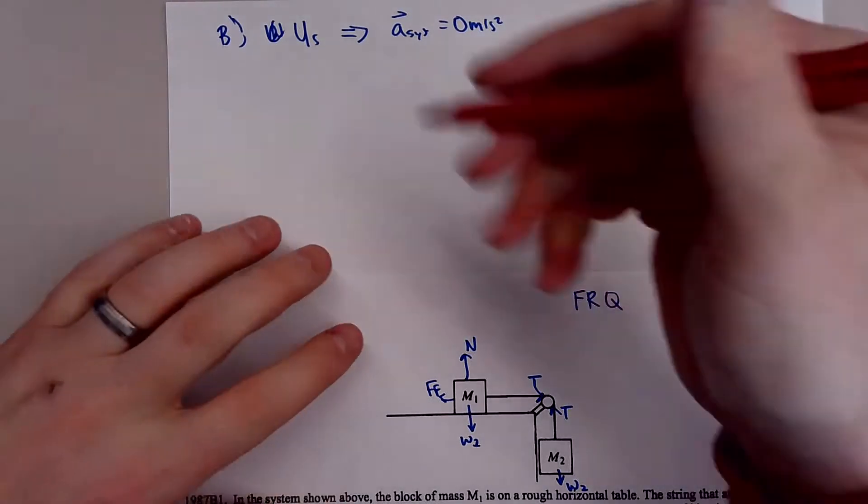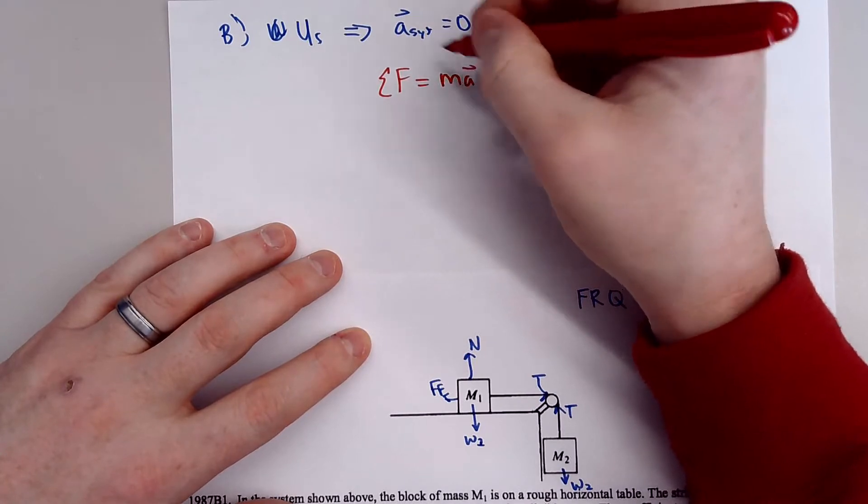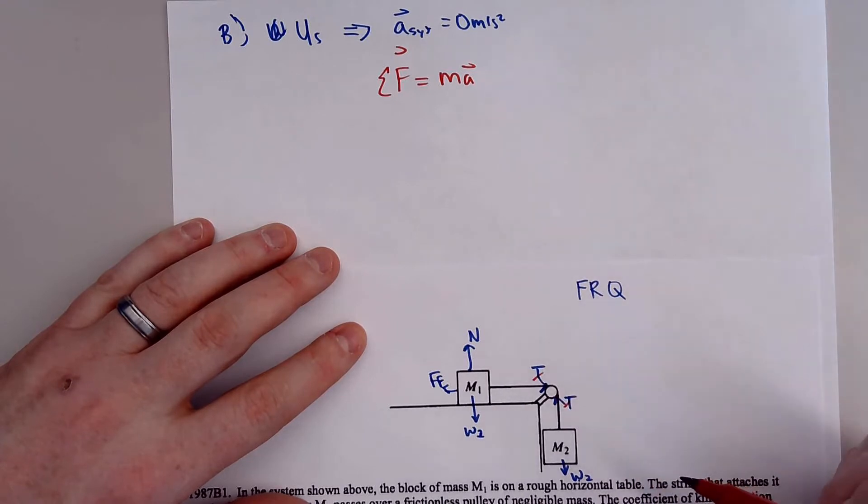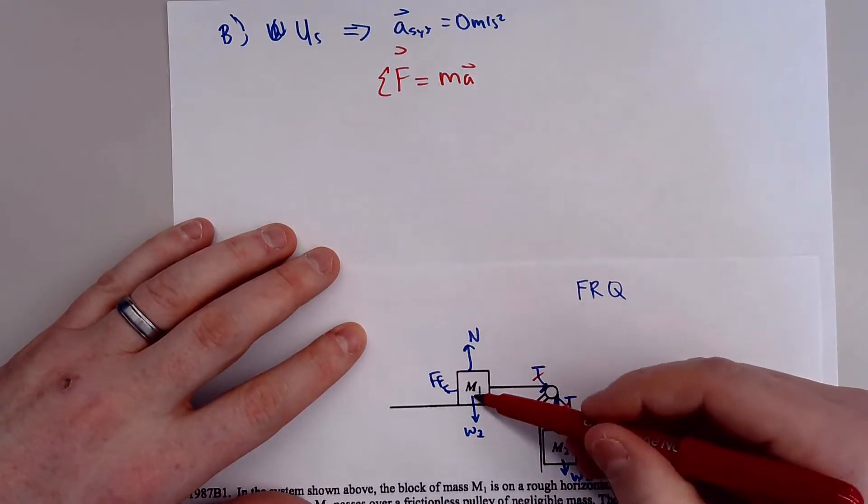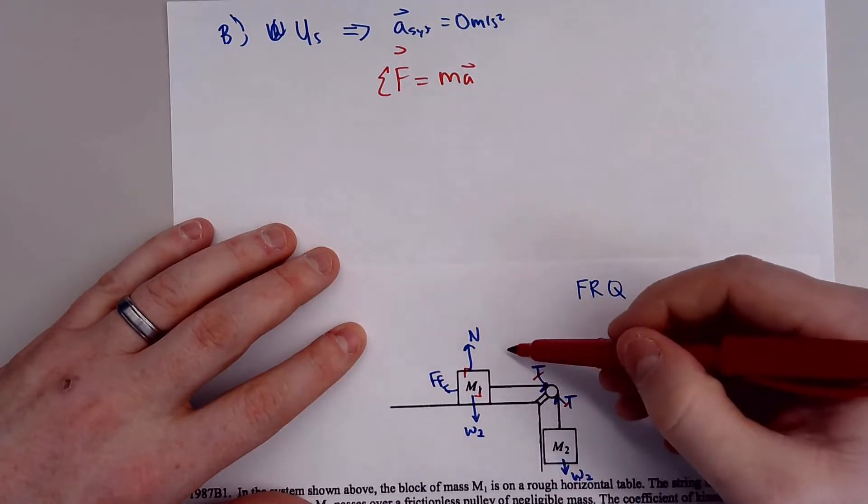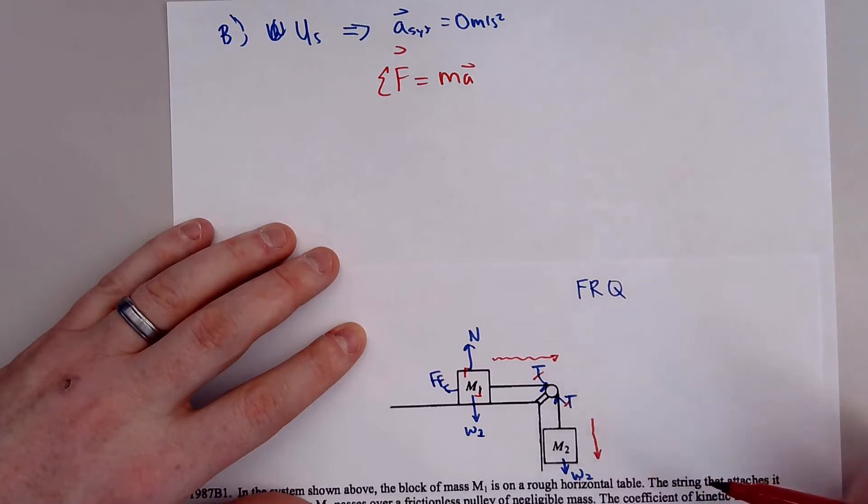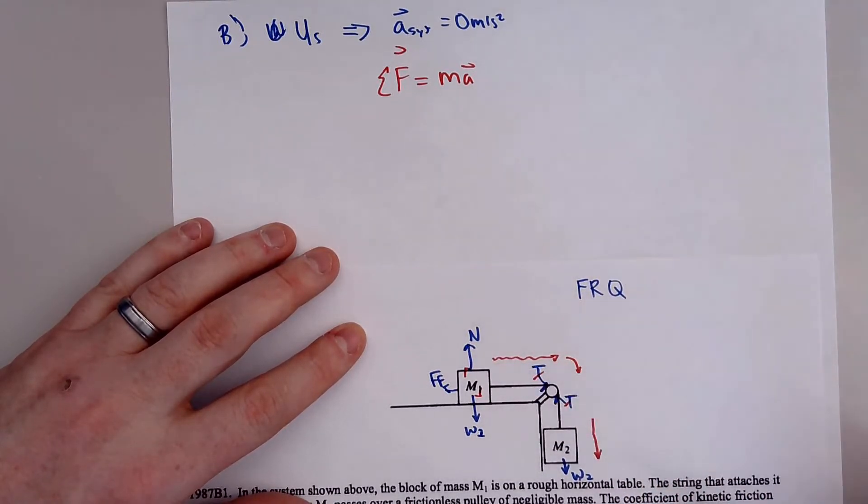All right. We're using Newton's second law. F equals MA. All right. And notice we have M2 times gravity. These two tensions will cancel out. These two normal force and the weight, they are perpendicular to our motion. So imagine this block, this block's going to slide this way, and this block's just going to fall straight down. And kind of notice, they'll kind of do like a little turn right here.